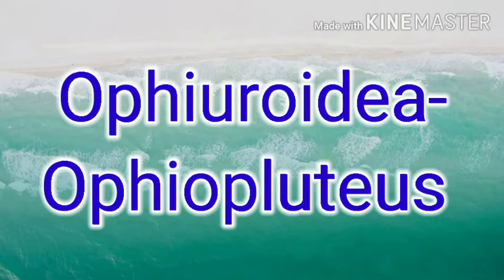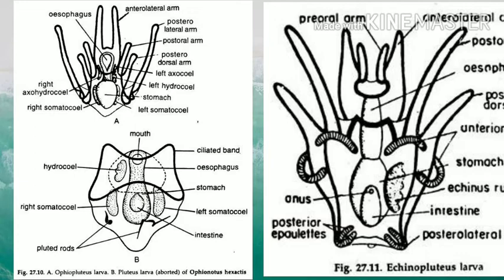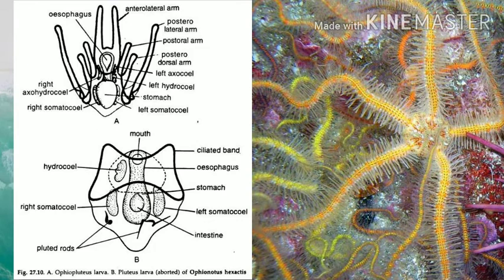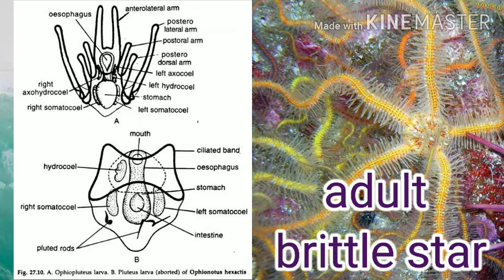The ophiopluteus larva of Ophiuroidea resembles the echinopluteus larva of Echinoidea. It has anterolateral, posterolateral, and posterodorsal arms, but the pre-oral arm is absent. Instead it has very long posterolateral arms. All arms are supported by calcareous skeletal rods. This larva metamorphoses to become the adult.